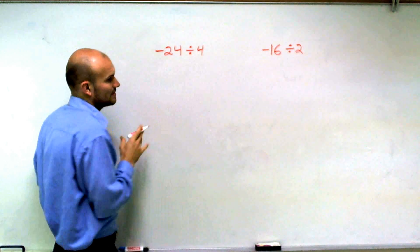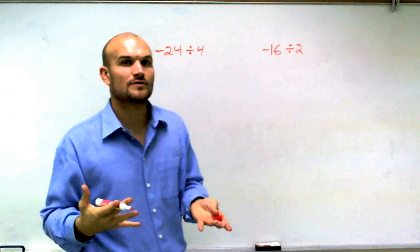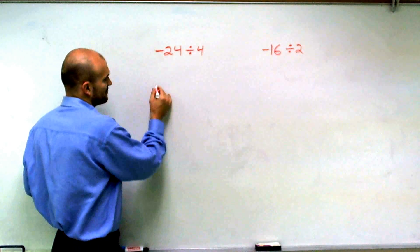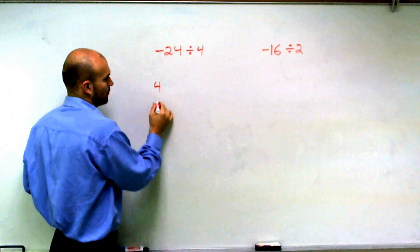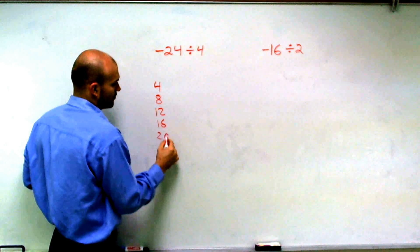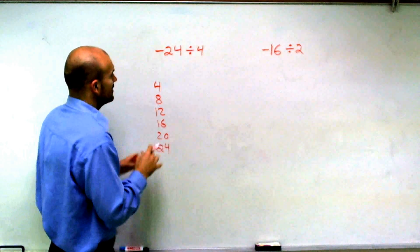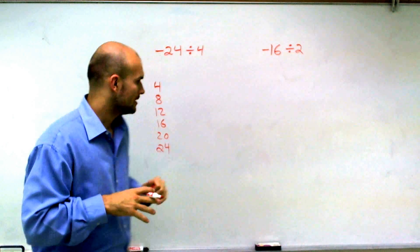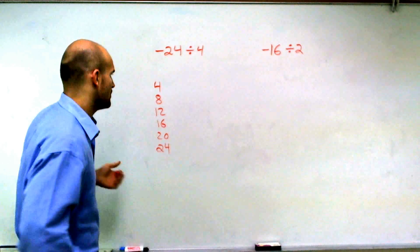One thing we can think about is it's really helpful to understand the multiples of your number that you're dividing by. So if I'm dividing by 4, I can just write the multiples of 4: 8, 12, 16, 20, and 24. I'm not really going to be concerned right now with this negative sign. That's going to work itself into the answer as well.